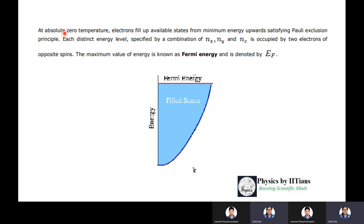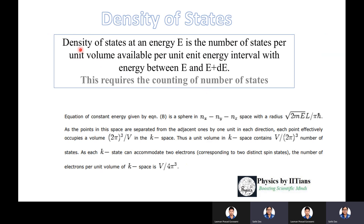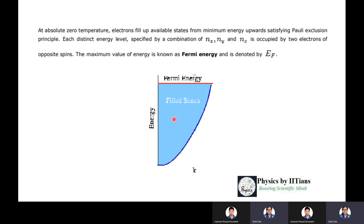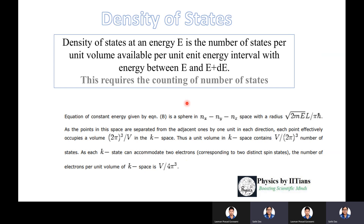At absolute zero temperature, electrons fill available states from minimum energy upward, satisfying the Pauli exclusion principle. Each distinct energy level — specified by quantum numbers nx, ny, nz — is occupied by two electrons of opposite spins. The maximum energy value is known as the Fermi energy E_F. To understand how electrons are distributed within energy levels, we need the concept of density of states: the number of states per unit volume available per unit energy interval between E and E+dE.